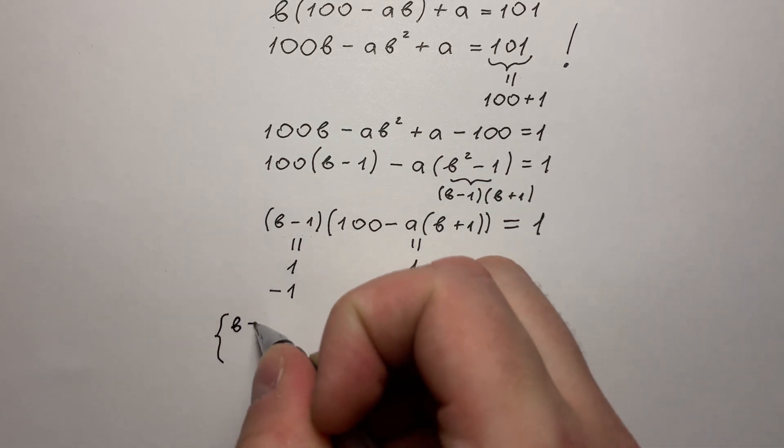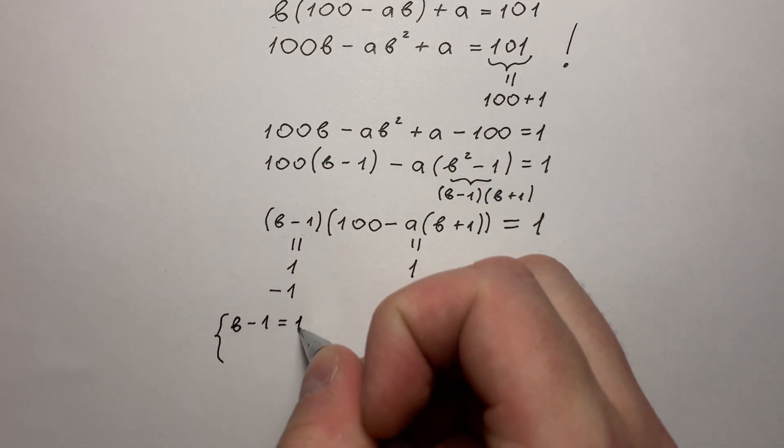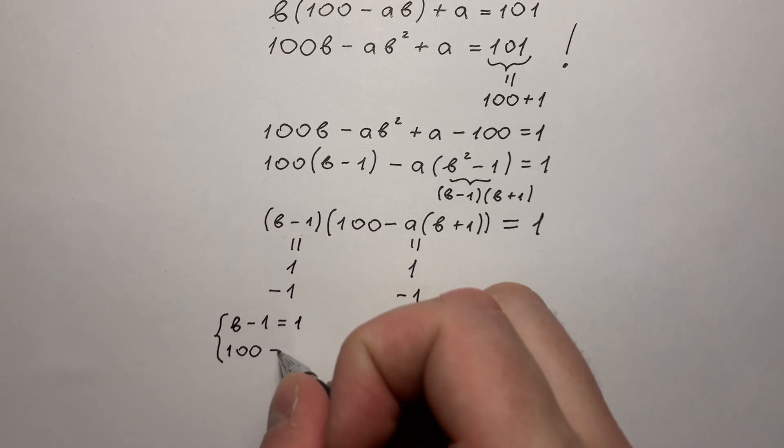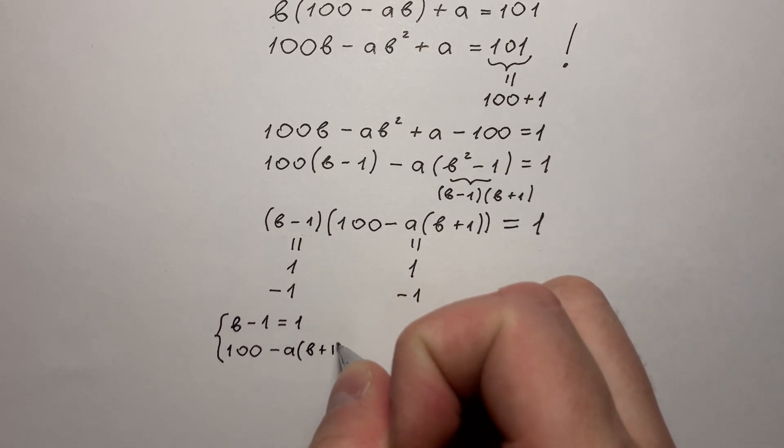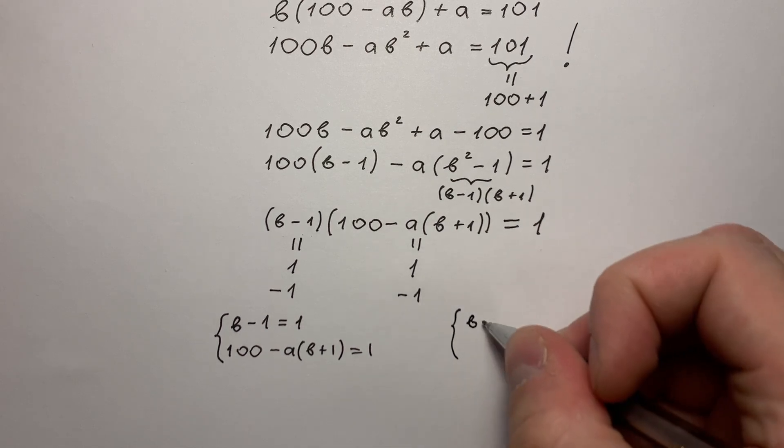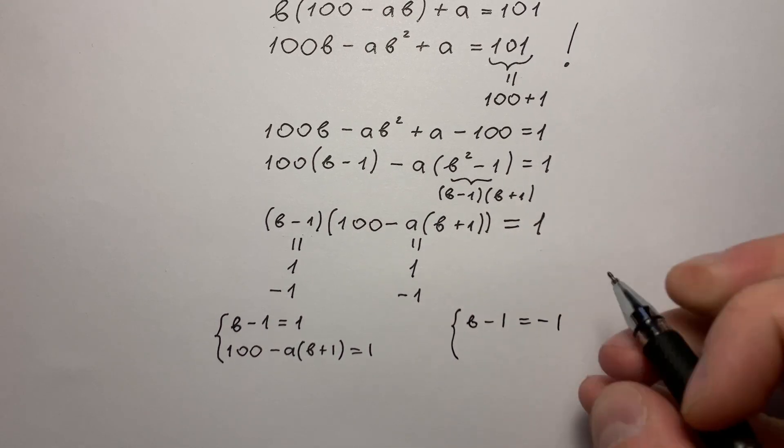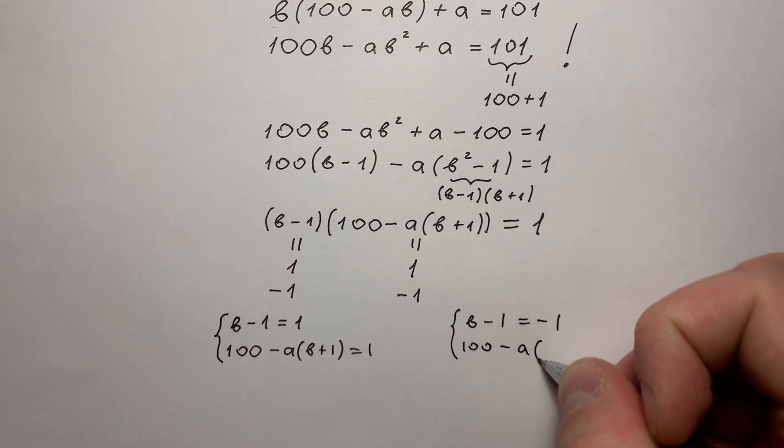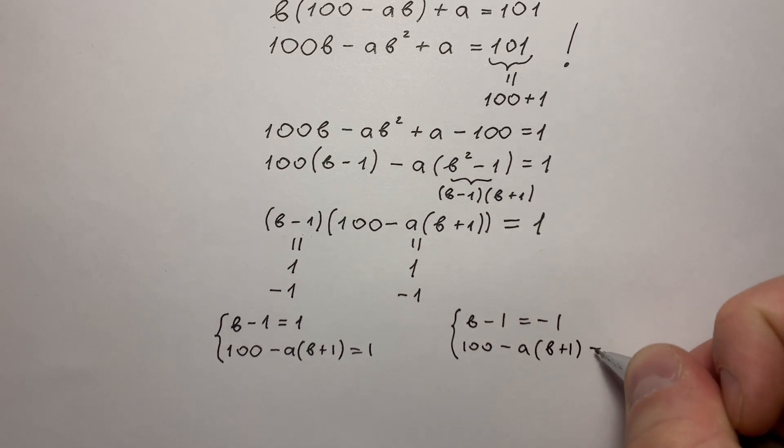First case: B minus 1 equals 1 and 100 minus A times B plus 1 equals 1. Second case: B minus 1 equals minus 1 and 100 minus A times B plus 1 equals minus 1.